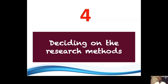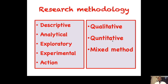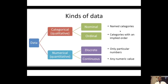Now we have to decide on a research method. Research methods can be descriptive, analytical, exploratory, experimental, or action research, as I have already mentioned. Methods can be further classified as qualitative, quantitative, or mixed method data collection. When you look at the kinds of data, data can be categorical — more of a qualitative study — or numerical, a quantitative type of study.